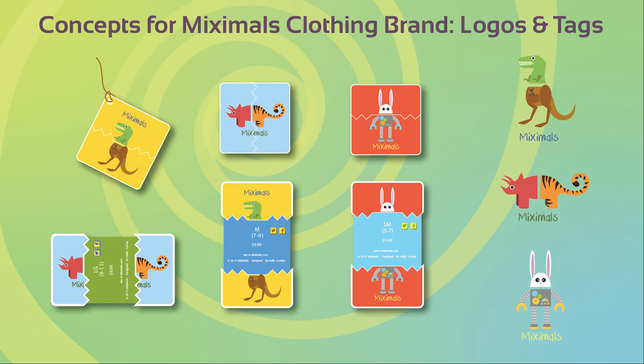This is a branding concept I came up with for a children's clothing company called Miximals. The clothes would all have designs that make them look like the appendages of different animals — like tiger legs or a kangaroo body on a shirt — so kids can combine different combinations to pretend to be whatever hybrid animal they feel like being. I came up with several variations of their logo and different ways to express the concept.